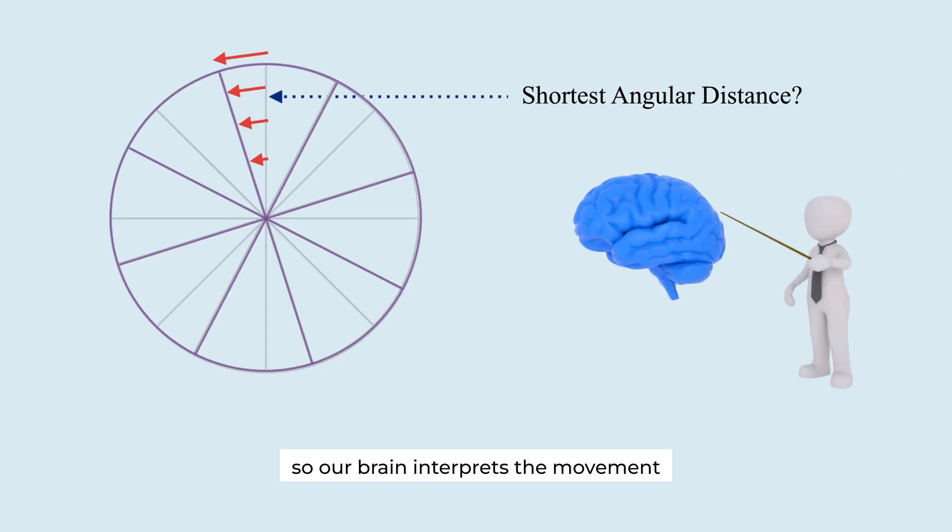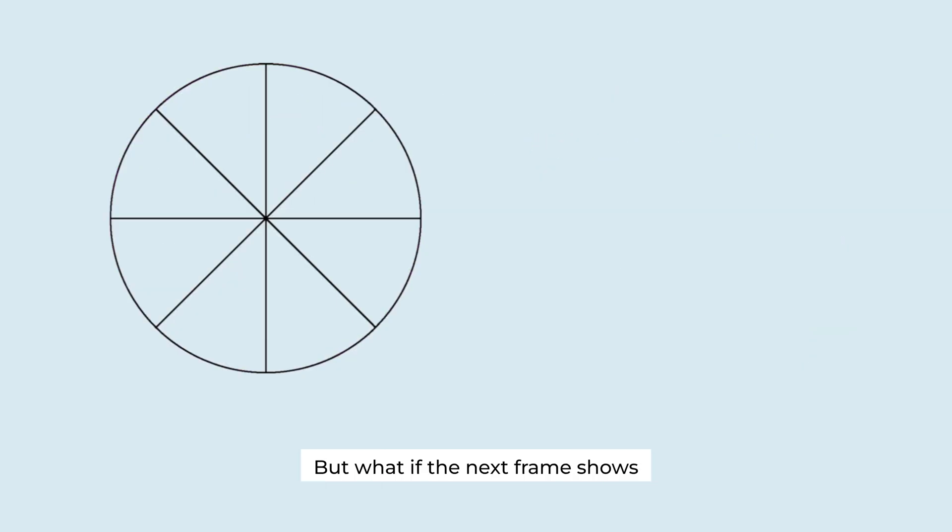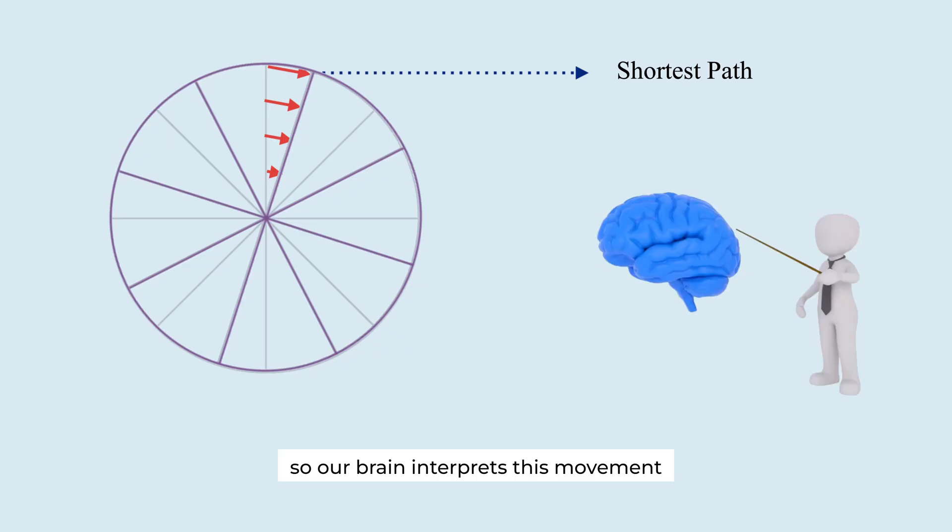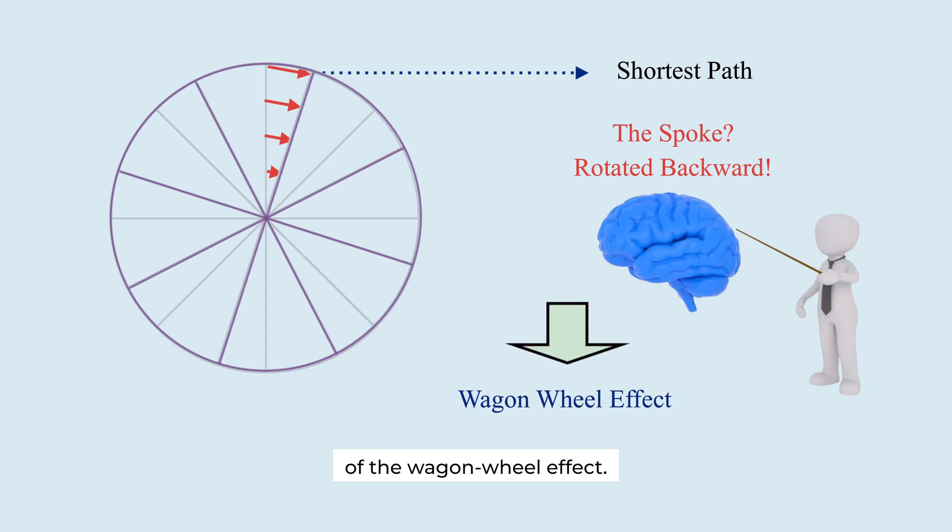But what if the next frame shows the spokes shifted closer to the next spoke past halfway? In this case, this is the shortest path. So our brain interprets this movement as the spoke having rotated backward. This is the essence of the wagon wheel effect.